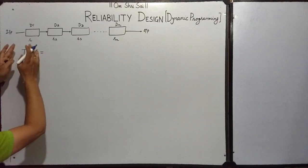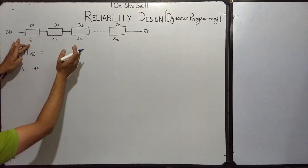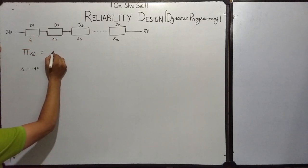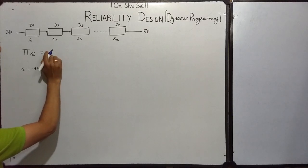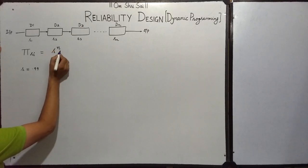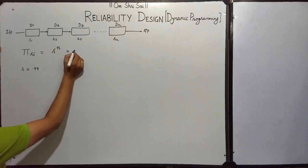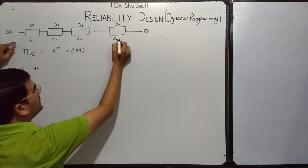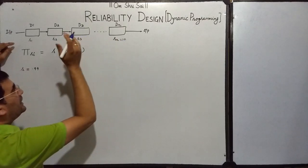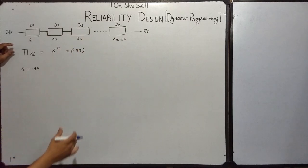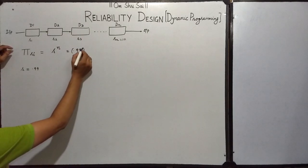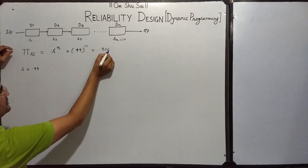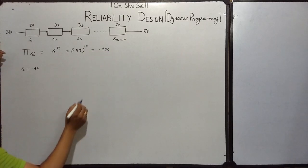As we know, the reliability at each level is multiplied, and hence the overall reliability will be R to the power n, which equals 0.99 to the power n. Let us take n = 10 — we have 10 devices in this system. Solving that, the probability will be 0.904.